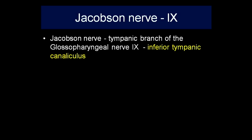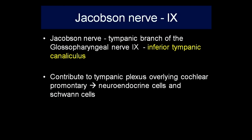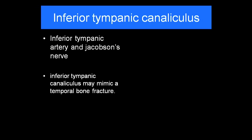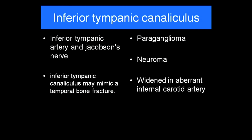The Jacobson's nerve travels through the inferior tympanic canaliculus, which is important for two reasons: it contributes to the tympanic plexus overlying the cochlear promontory, and it contains neuroendocrine cells meaning you can get a chemodectoma (glomus tympanicum) or a schwannoma here. On imaging, a small dot between the carotid canal and the pars nervosa is the inferior tympanic canaliculus. On the coronal plane, the gap going toward the cochlear promontory is where glomus tympanicum should be sought. This canaliculus also harbors the inferior tympanic artery, and if widened, suspect an aberrant internal carotid artery traversing the middle ear.